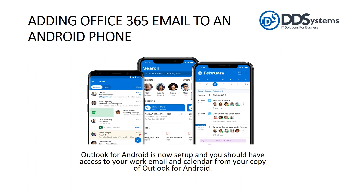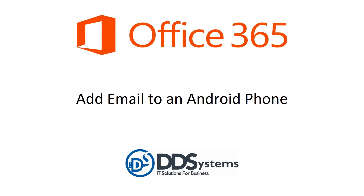The setup is now complete and you should have access to your work email and calendar from your copy of Outlook for Android. This concludes the setup for Office 365, adding email to an Android phone.